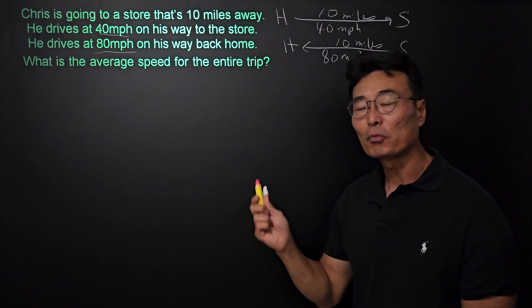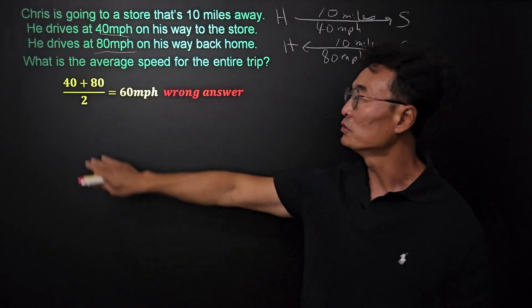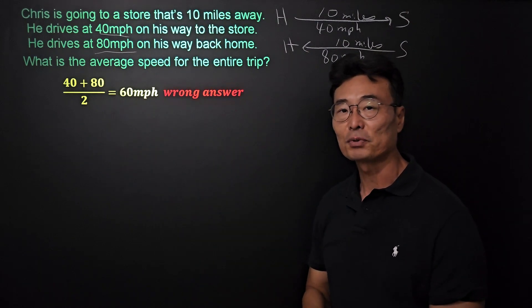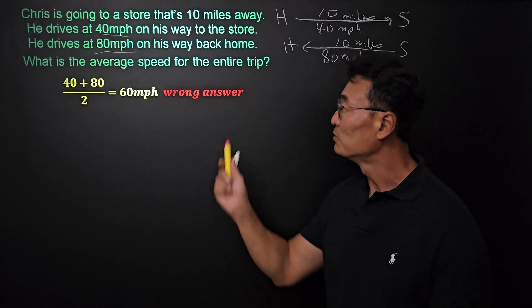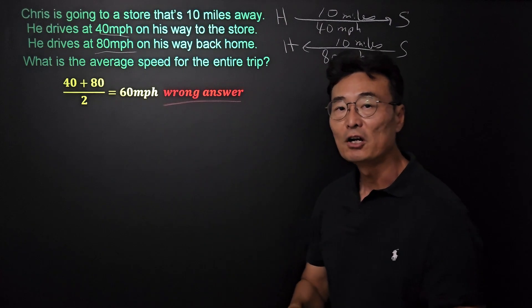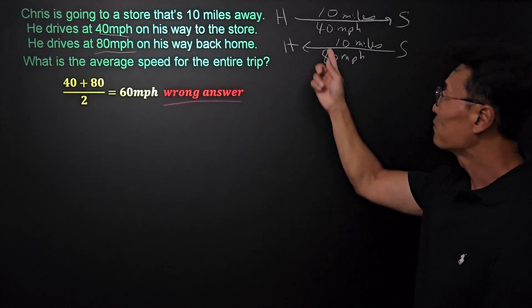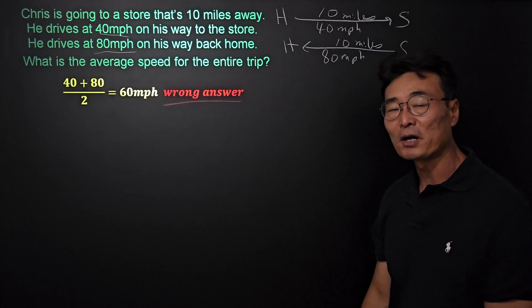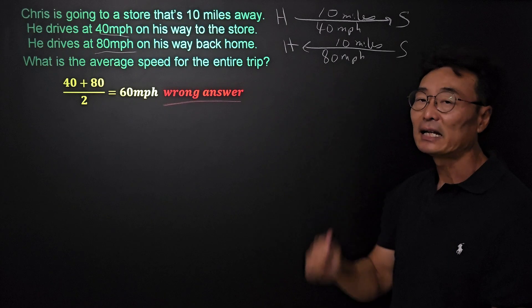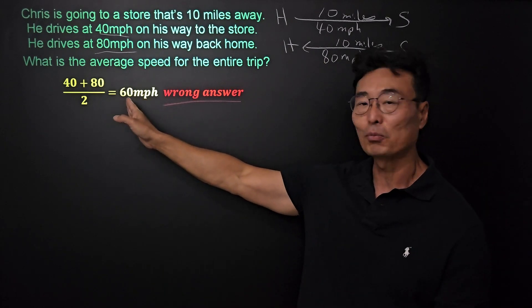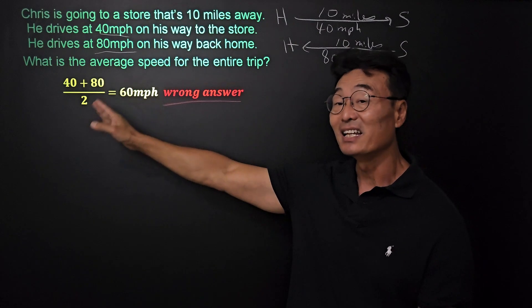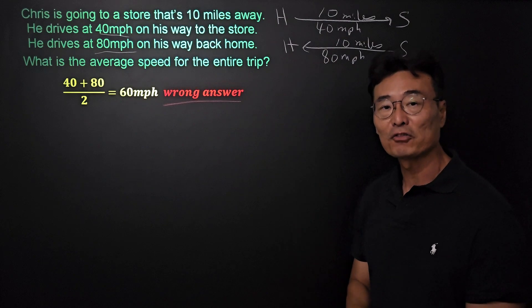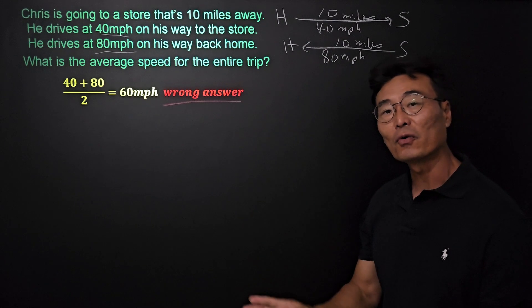Thinking of the average as adding up what we have and dividing by how many we have, most people will do 40 plus 80 and then divide by 2 to come up with 60 miles per hour. But that's not the right answer. Because he's driving at 40 miles per hour going to the store, he's going to be spending more time at 40 mph than at 80 mph. Since 60 is the halfway point, the actual average is going to be less than 60 — closer to 40 miles per hour.